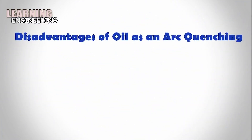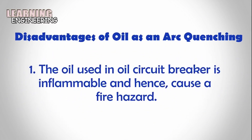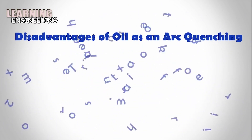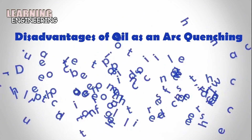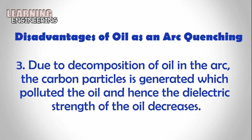Disadvantages of Oil as an Arc Quenching Medium: 1. The oil used in the oil circuit breaker is inflammable and hence causes a fire hazard. 2. There is a risk of the formation of an explosive mixture with air. 3. Due to the decomposition of oil in the arc, carbon particles are generated which pollute the oil and hence the dielectric strength of the oil decreases.